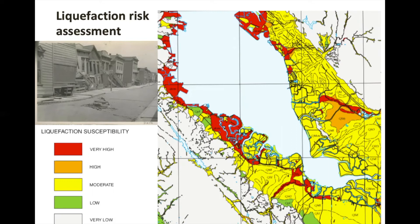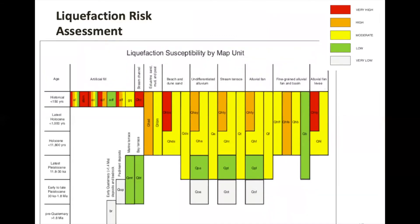This is part of a USGS liquefaction susceptibility map of the San Francisco Bay area. You can see liquefaction susceptibility has been divided into five categories from very low to very high. Note that very high liquefaction susceptibility is concentrated around rivers and right next to the bay. I've also included another photo from the Loma Prieta earthquake event illustrating buoyancy.